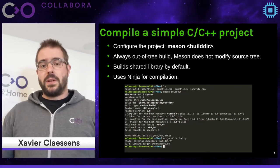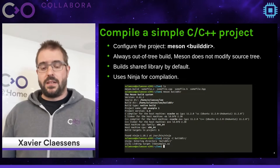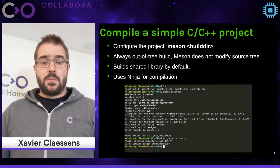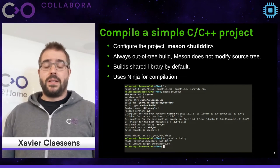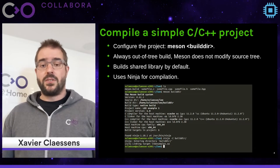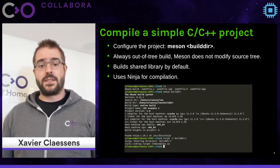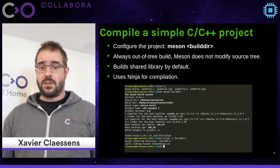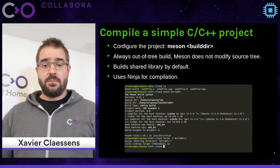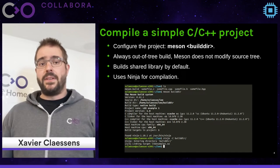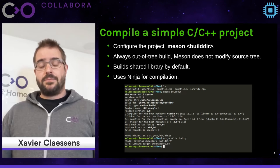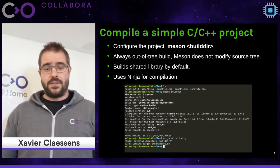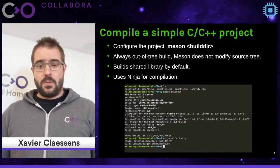Most Linux distributions already have Meson packaged, but it's often old. If you want the latest version with new features and bug fixes, you'll likely have to install it yourself. The good news is it's really easy because Meson is packaged on PyPI, so with a simple command you can install both Meson and Ninja on any system, as long as you have Python 3.